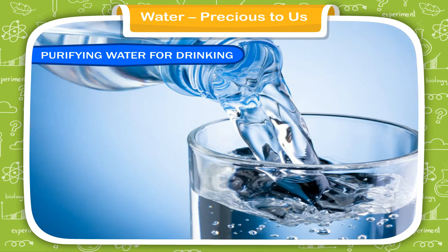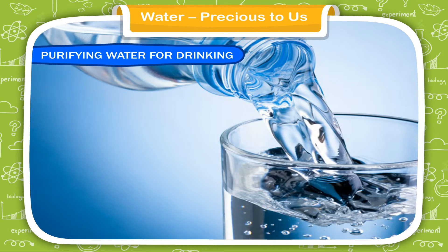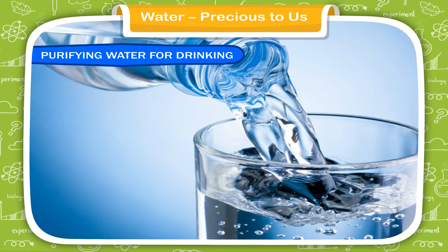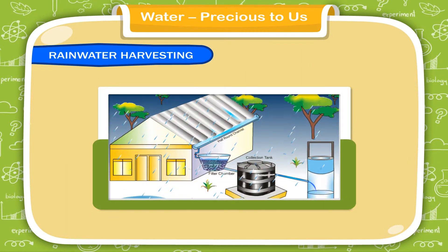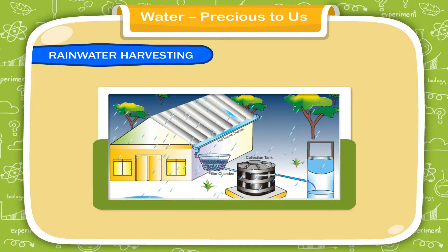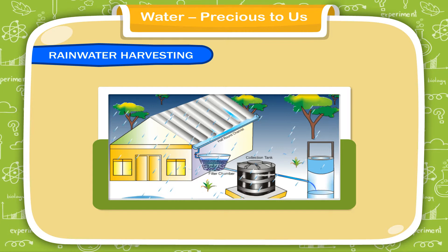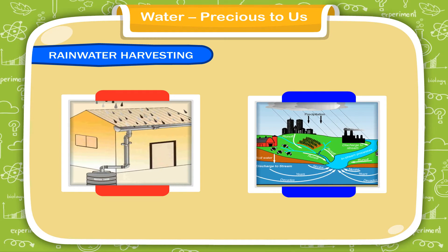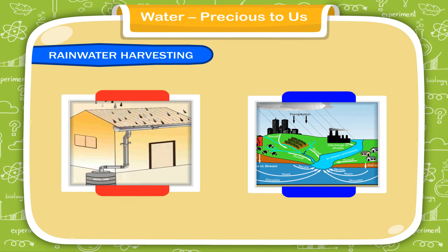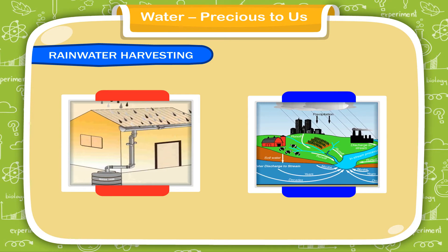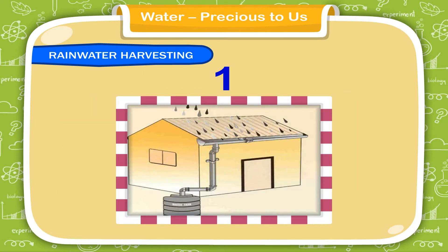Water is a precious resource; we should use it sensibly and save as much as possible. One of the best methods to conserve water is rainwater harvesting. Rainwater harvesting is a modern technology of reusing rainwater, followed in many parts of India. It is the method of collection and storage of rainwater from rooftops or land surfaces for future use. There are two techniques of rainwater harvesting.